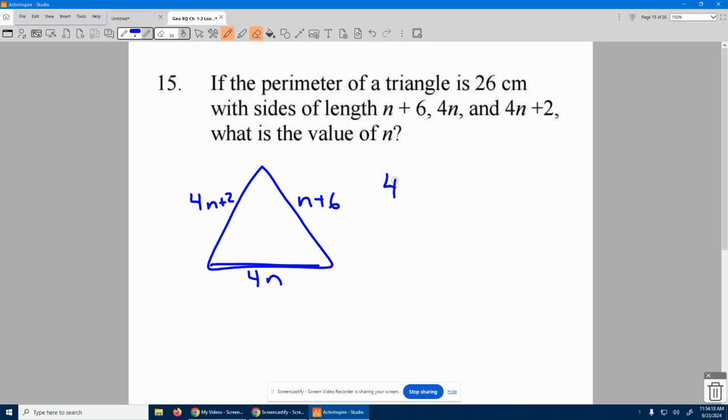Well, we know they all add up to what? 26. So I take the 4n plus 2 plus the 4n plus the n plus 6, and they have to add up to the distance around of 26.